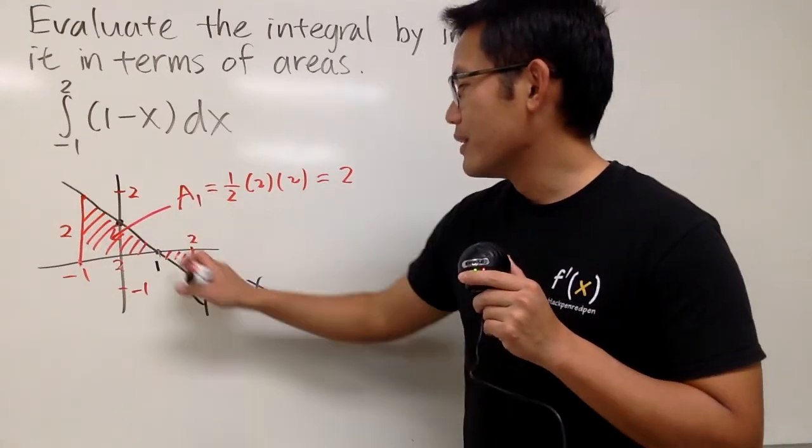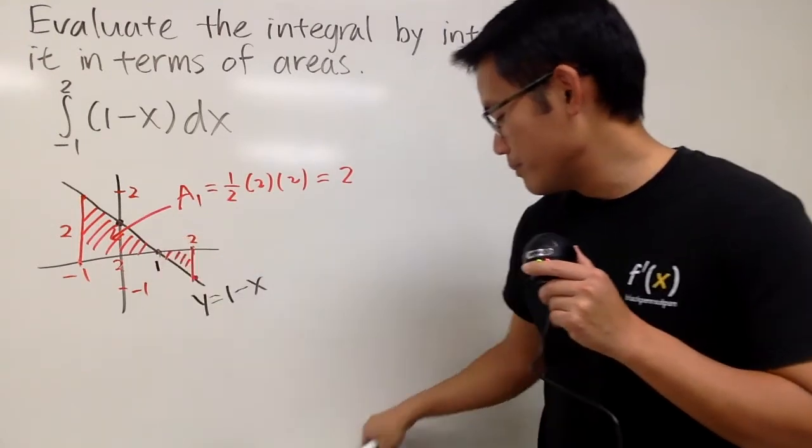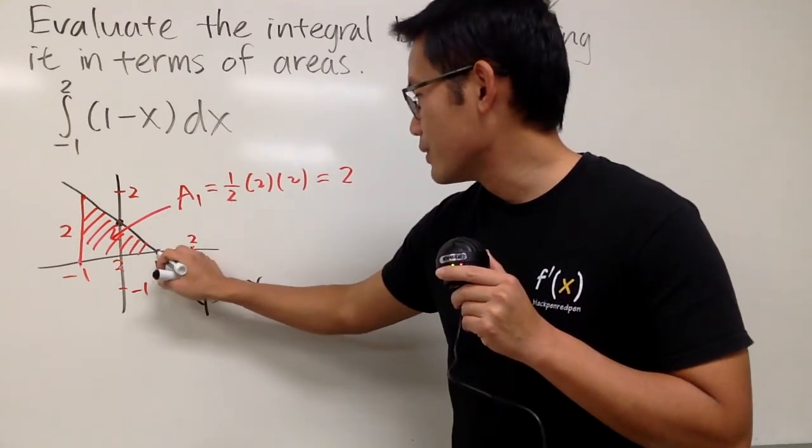Alright, now for this one. From here to here, of course, that will be 1, so perhaps I'll make this in green so that we can see better. So it's like this. So this is 1.